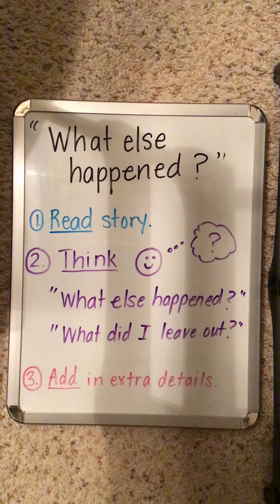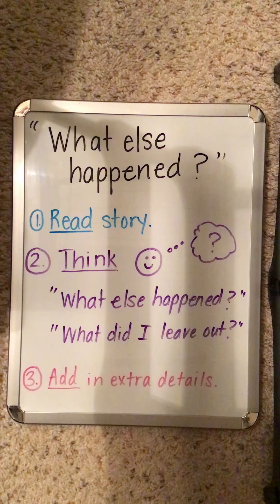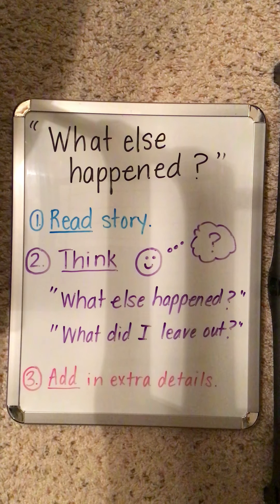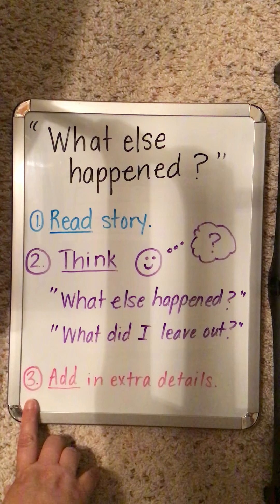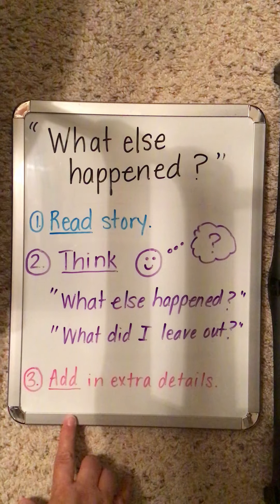I notice even when I write as an adult, I leave things out. It's a lot of work that our mind does when we are composing or thinking about the sentences that we are writing, so we often leave things out. So rereading the story and thinking, 'What else happened?' or 'What did I leave out?' — and then the third step is going back in and adding in some extra details.